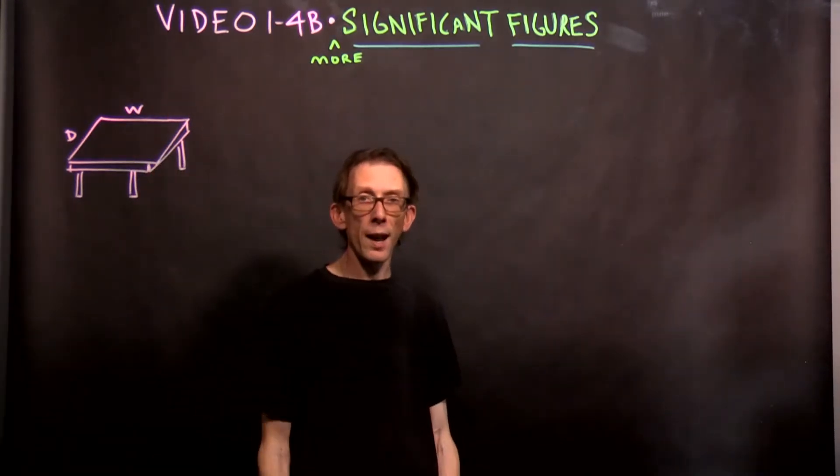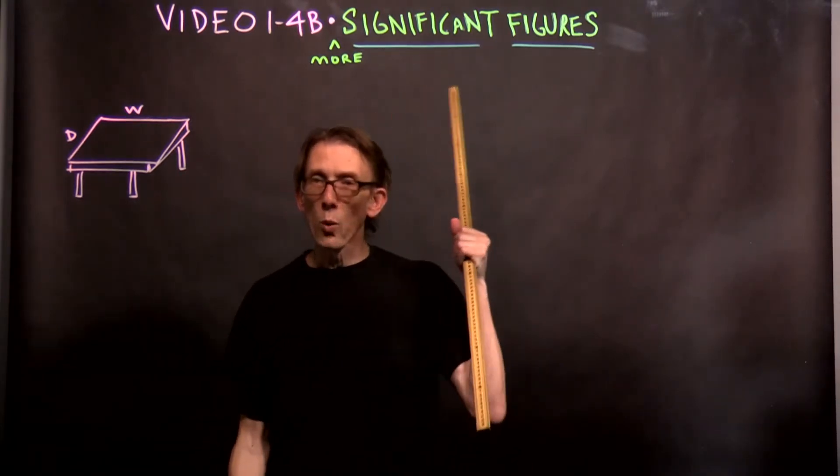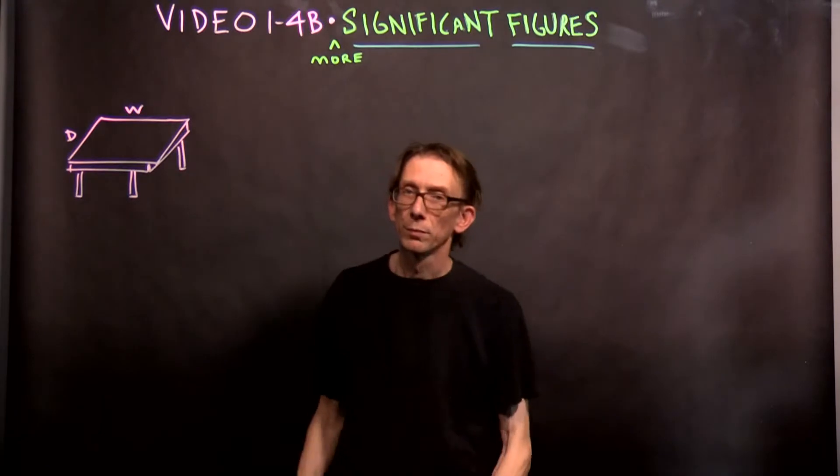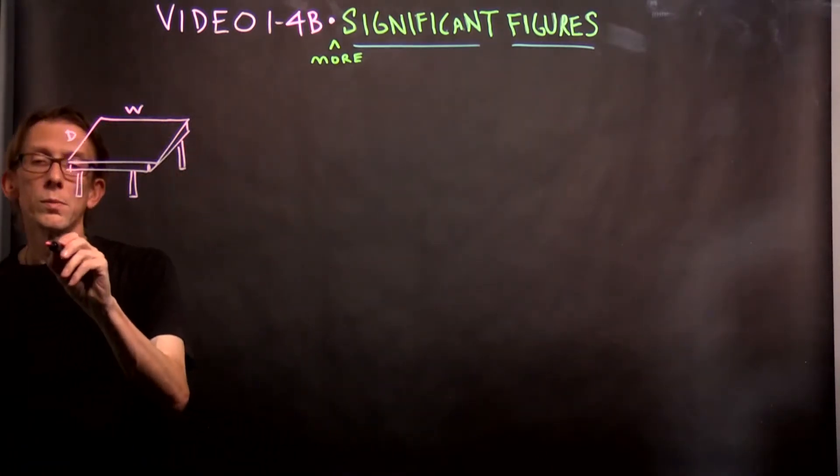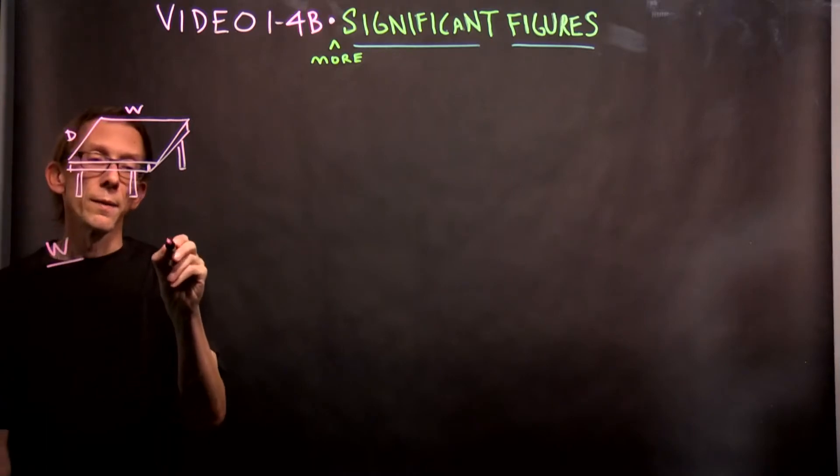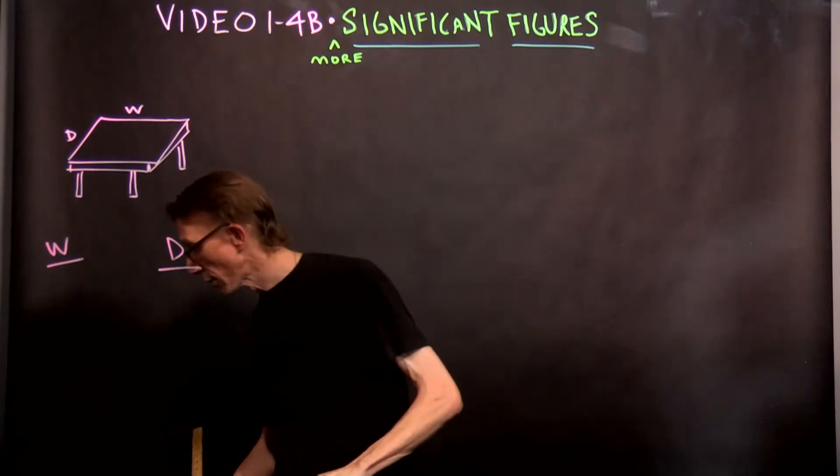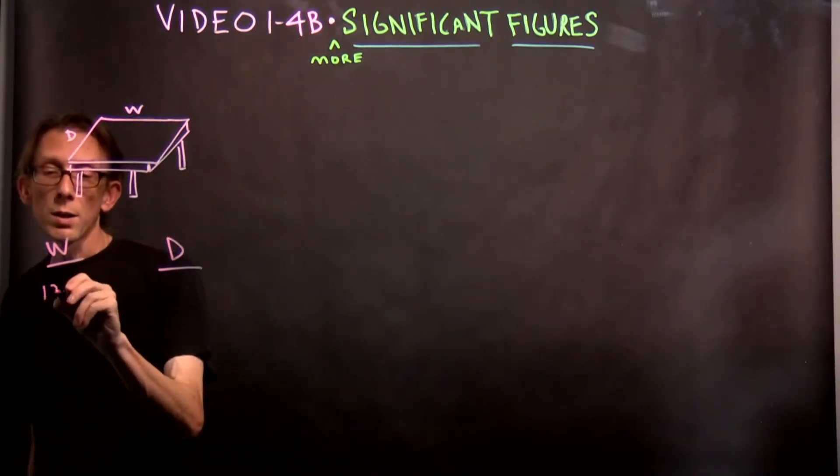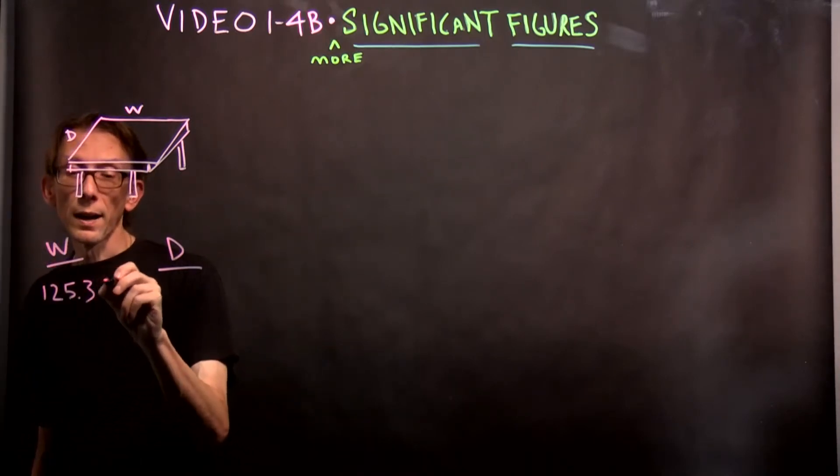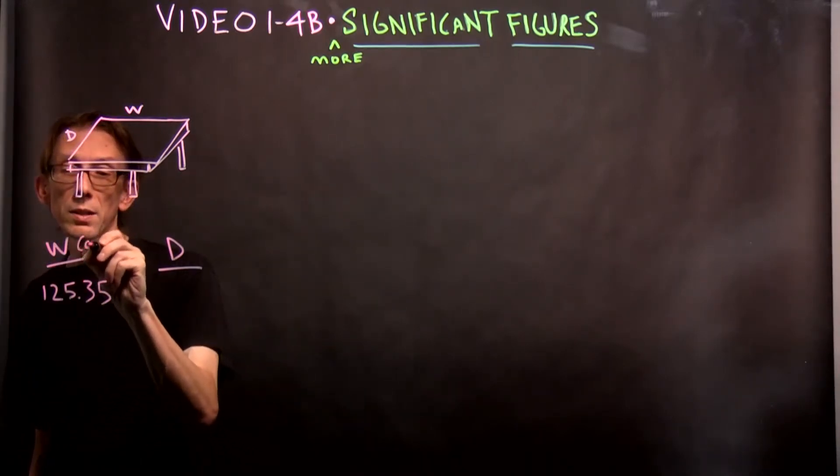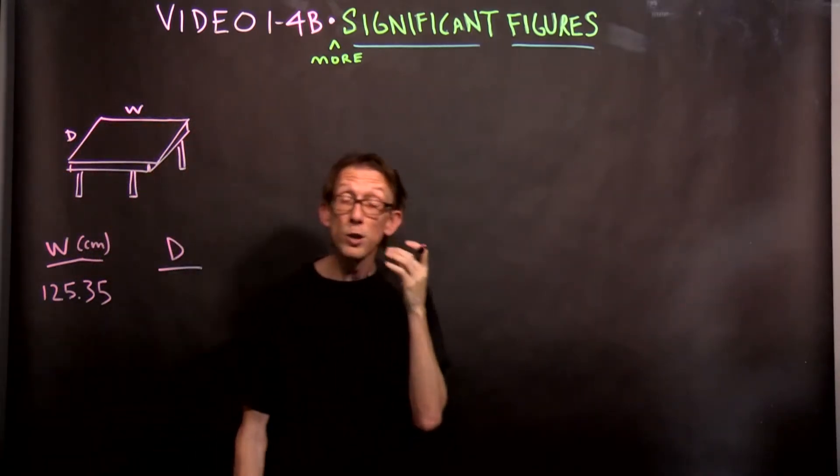So I call up student A. I call up somebody and I say, student A, measure width and depth of the table with this stick now. Okay, and she does so. And so we have width and we have depth. And the first student, student A, gives me these numbers right here. 125 point three five, this is centimeters.